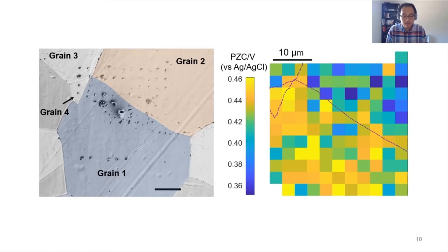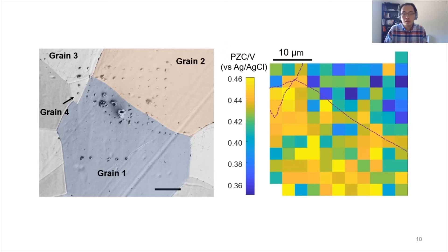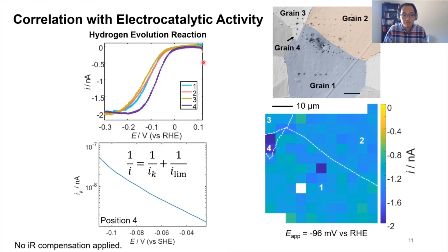We can go a step further and also measure the electrocatalytic activity and correlate it to the local PZC. This is another polycrystalline platinum sample containing four major grains. We map the PZC values as described, and simultaneously at the same locations we measure voltammograms corresponding to the hydrogen evolution reaction, extracting local electron transfer kinetics. A map of the current during the voltammogram at a certain voltage shows that grain number four has a much higher activity compared to the other grains, which is also visible from the voltammograms where the peaks take off much earlier.